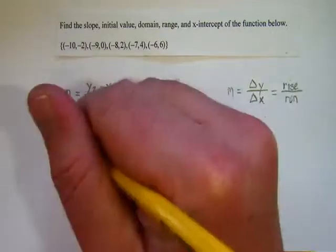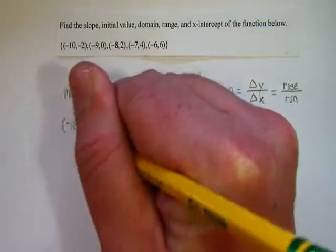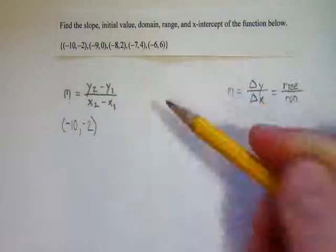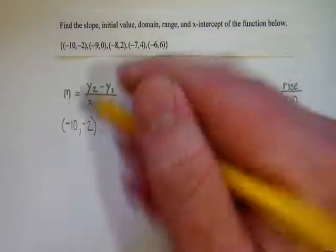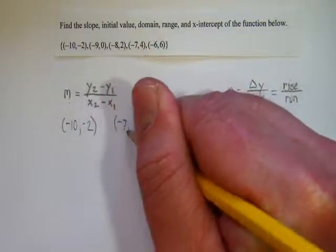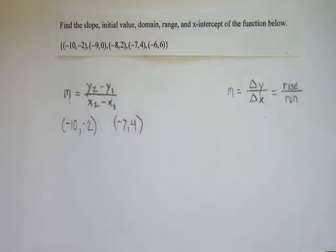I'm going to take the first point, negative 10, negative 2, and this point, because hey, why not, of negative 7 and 4. So these are my two points that I'm going to use to calculate the slope.